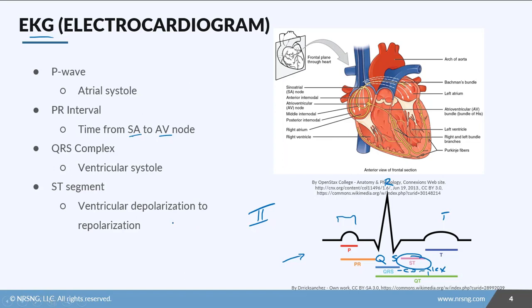When the ST segment occurs, the heart is getting ready to fire again. Then you have the T wave, which is when the ventricles relax. The EKG allows us to check for things like electrolyte imbalances, and it also allows us to see if there are any problems within the electrical conduction system of the heart.